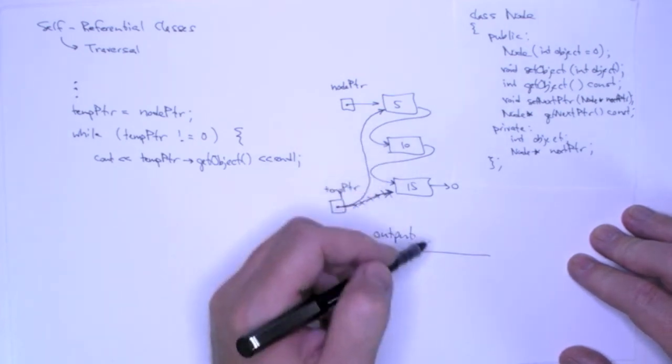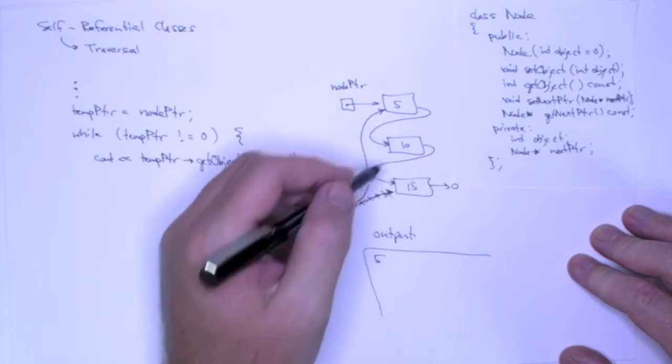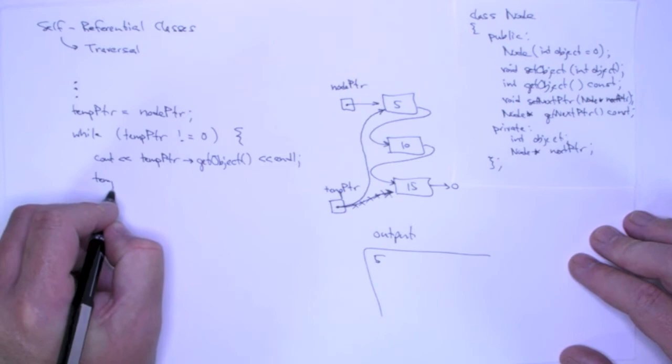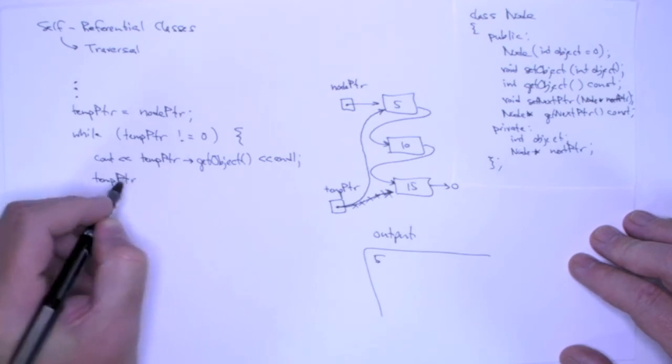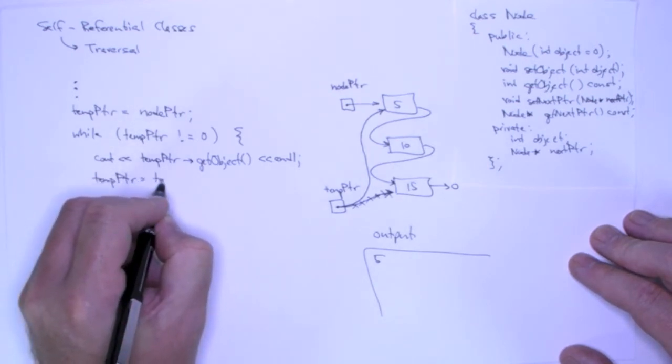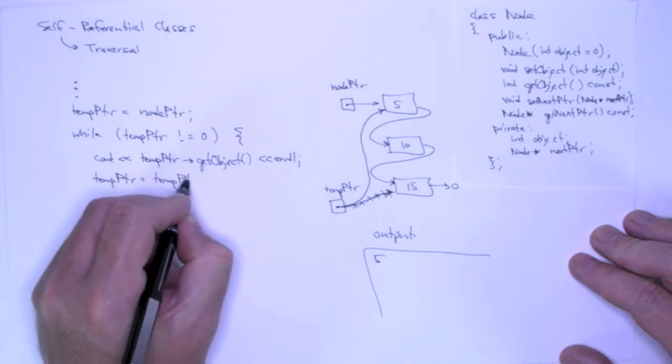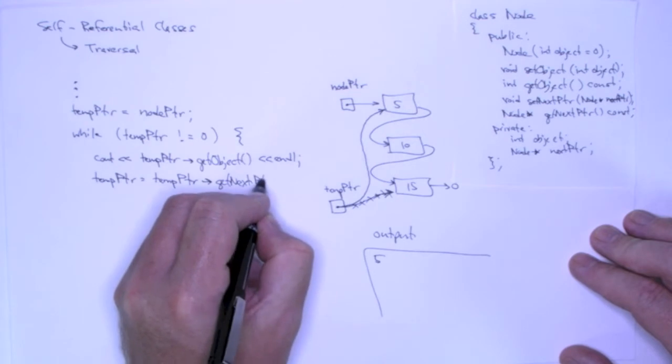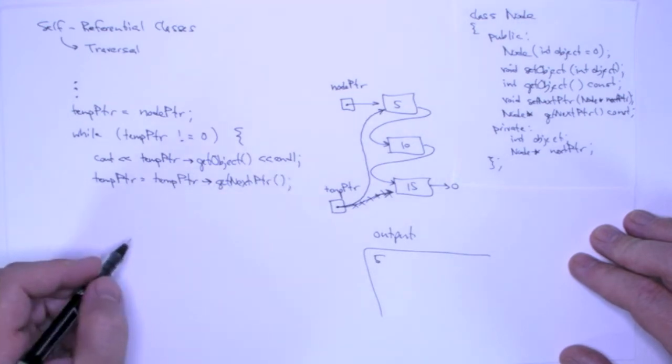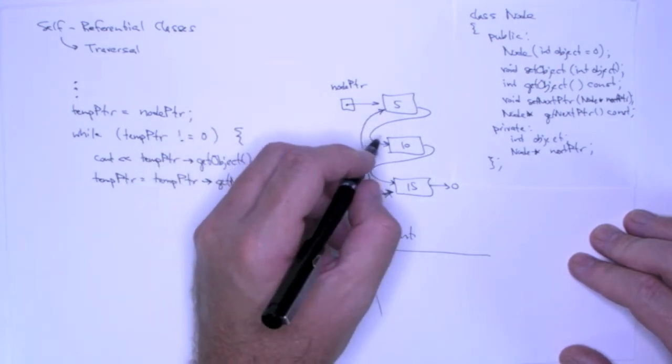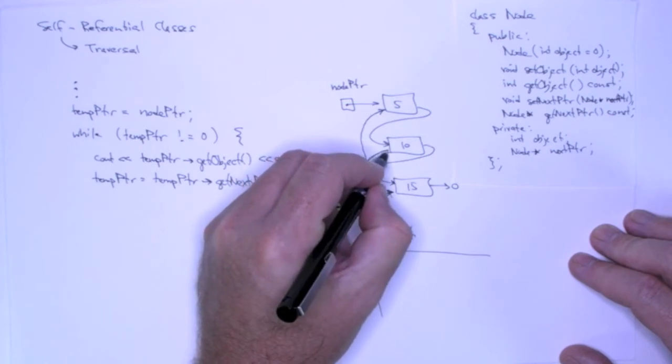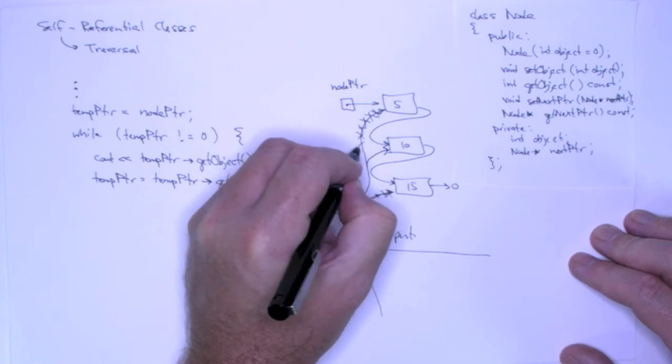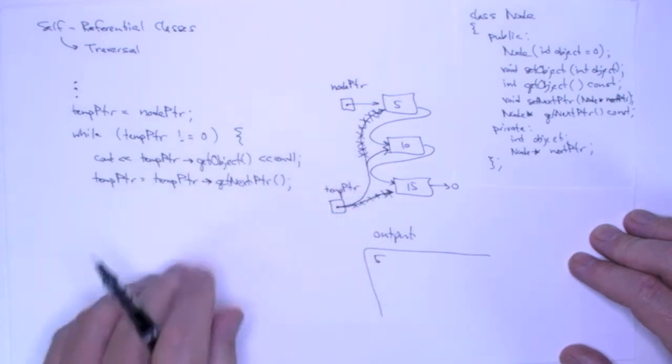And now that I've printed five, I need to print ten. And in order to do that I need to advance temp pointer to the next node. We know how to do that. I just say temp pointer is equal to temp pointer get next pointer. Now that is going to make temp pointer point to the node containing ten. Just like that.